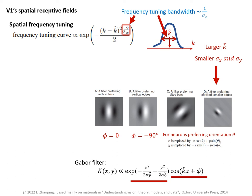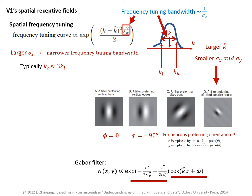Therefore, neurons with large receptive fields should have narrower frequency tuning width. Let's denote the high and low ends of this frequency tuning curve by k_h and k_l. In V1 neurons, typically k_h is 3 times k_l. So when the bandwidth is measured in octaves, this means 1.5 octaves is the typical bandwidth for V1 neurons.